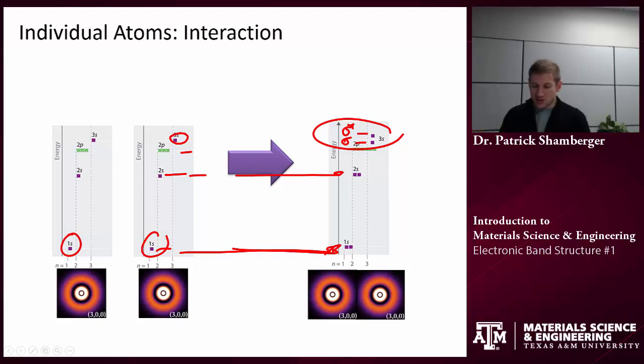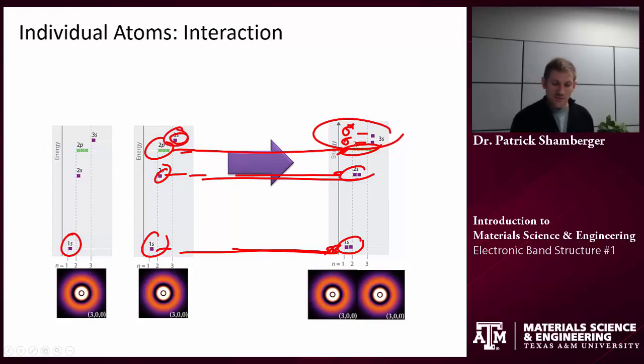They each have one 1s orbital. And the resultant combination is going to give us two 1s orbitals. Same thing for the 2s. Same thing for the 2p. They each have three orbitals initially and we end up with six. And finally for the 3s, we have two individual 3s orbitals and they split. So I have one orbital at a higher level and one at a lower level.